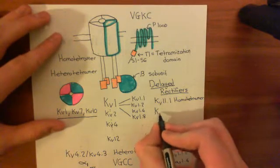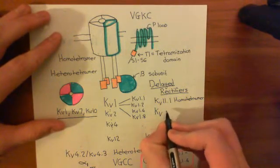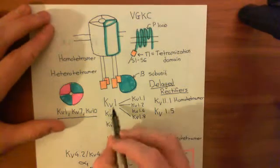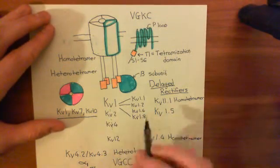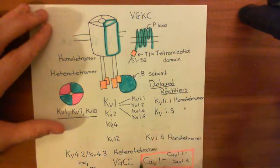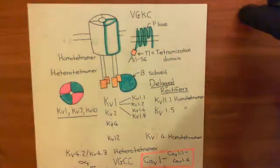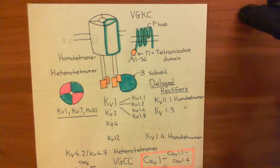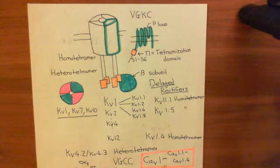Similarly, we have another homo tetramer, which is KV1.5 — that's in the first family. So KV1.5 is also a homo tetramer. You use this gene, make the protein four times, take these four proteins, stick them together — tetramerize them — and you've got the pore-forming unit of this voltage-gated potassium channel. These are delayed rectifiers.